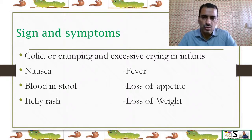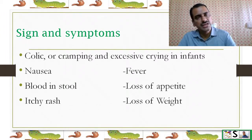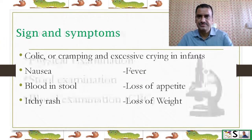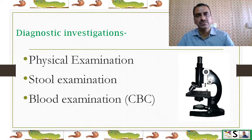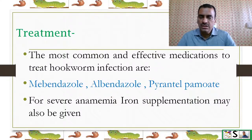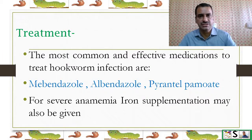Signs and symptoms of hookworm include colic, abdominal pain, cramping, and excessive crying in infants; nausea, fever, blood in stool, loss of appetite, itchy rashes at the site of entry (especially on the foot), and weight loss. Diagnostic investigations: physical examination, rashes visible on the foot, stool examination, and blood examination. Treatment: mebendazole, albendazole, and pyrantel pamoate are commonly used. For severe anemia, iron supplementation may be given.